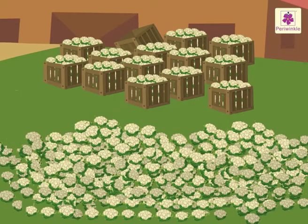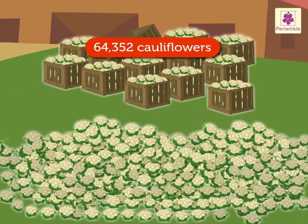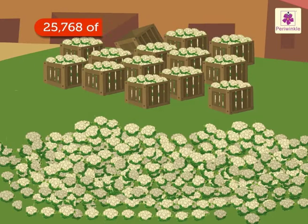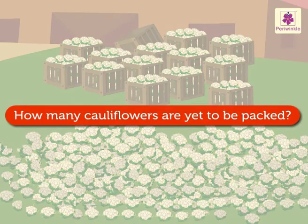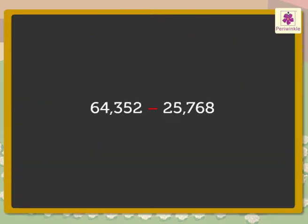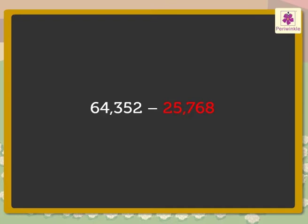Look! There are 64,352 cauliflowers and 25,768 of them are packed in boxes. Let us find out how many cauliflowers are yet to be packed. Here, we have to subtract 64,352 and 25,768 to find the answer.